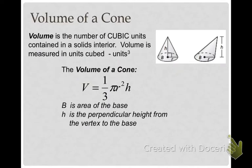All right, the volume of a cone is exactly one-third the volume of a cylinder. I've got a couple of pictures there of a right cone and an oblique cone. Notice that the pi r squared, we don't put a capital B. We just change it to the area of a circle, which is pi r squared. And the height is the perpendicular height from the vertex to the base.